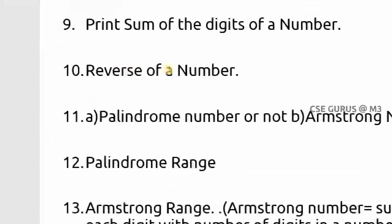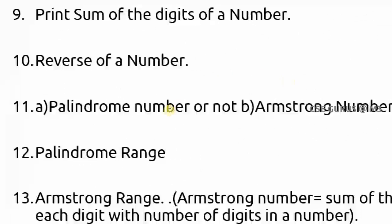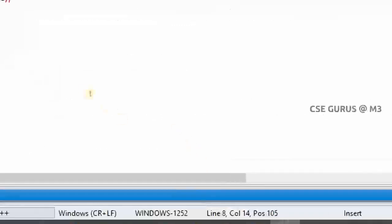Now for question 11: palindrome number or not. A palindrome means if you reverse it you get the same number — for example 323 reversed is 323, 848 reversed is 848, 1221 reversed is 1221. To find this, we take the previous reverse program and compare the reverse with the original number.